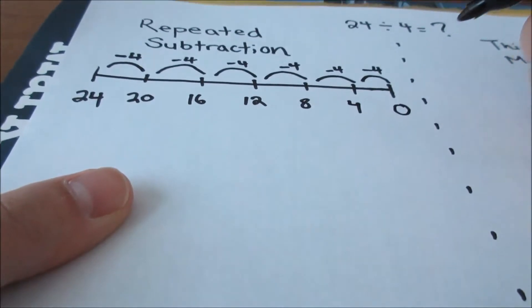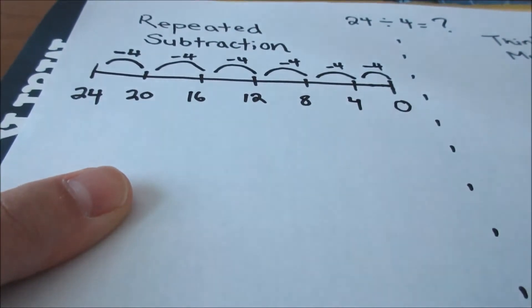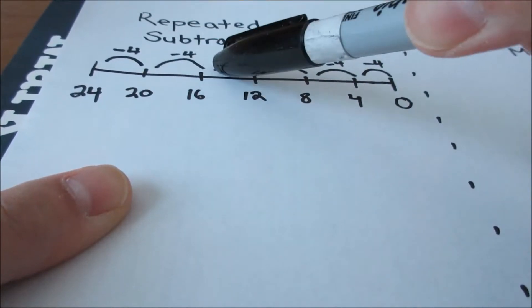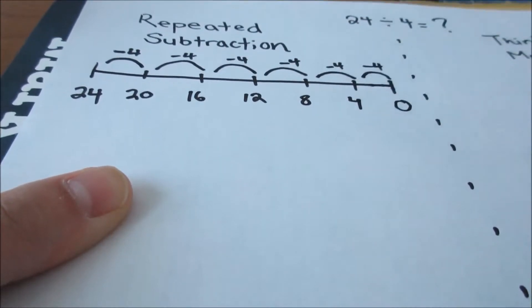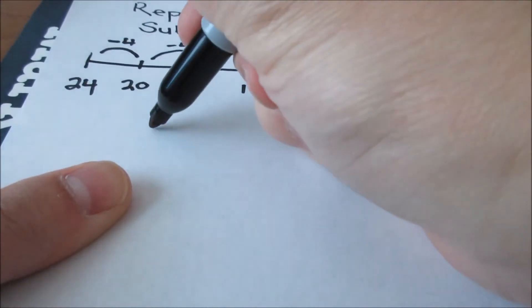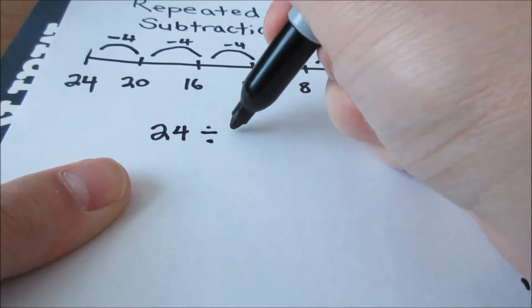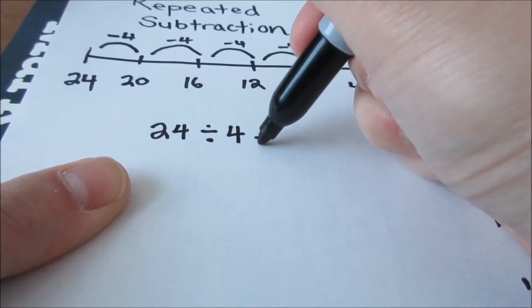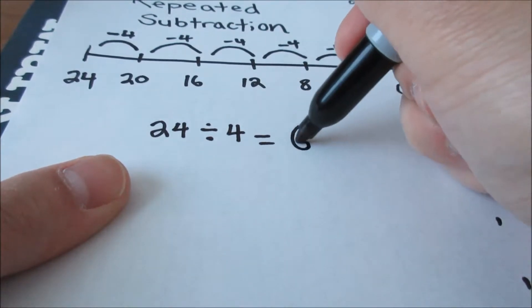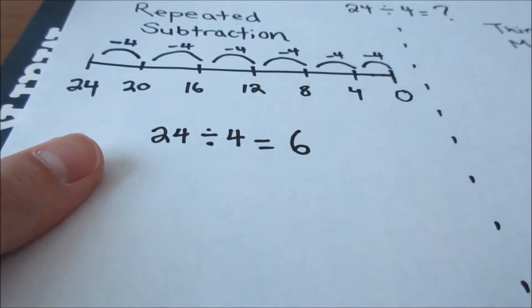Now, when I do this repeated subtraction, it's almost like equal sharing because you are taking 4 away equally. It's like you're giving 4 away equally until there is nothing left to give. And if you do that, then you end up giving 4 away 6 times.